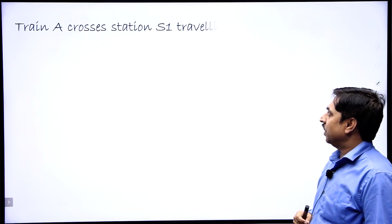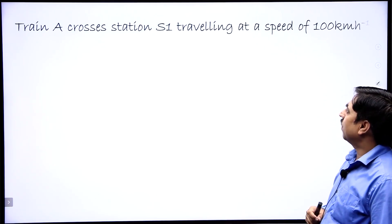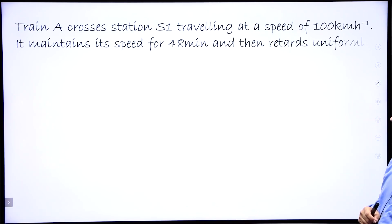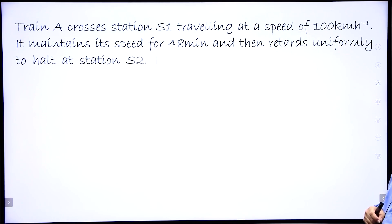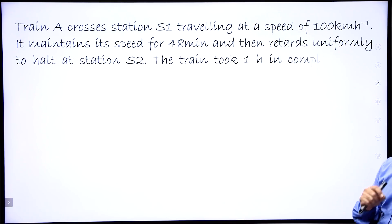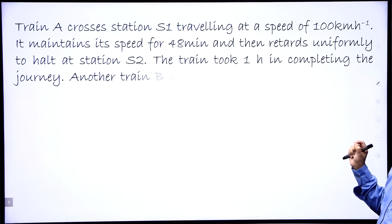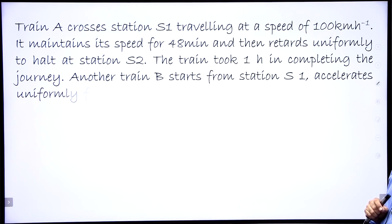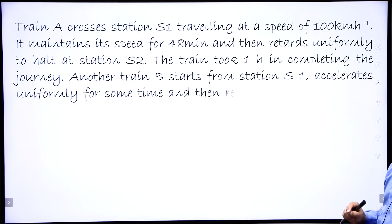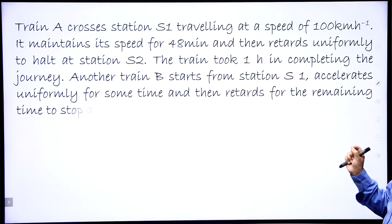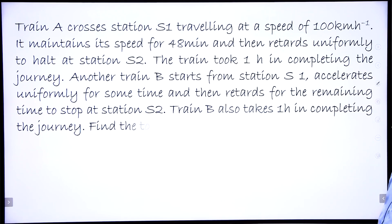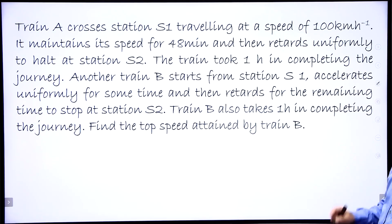Train A crosses station S1 traveling at a speed of 100 kilometers per hour. It maintains its speed for 48 minutes and then retards uniformly to halt at station S2. The train took one hour in completing the journey. Another train B starts from station S1, accelerates uniformly for some time, and then retards for the remaining time to stop at station S2. Train B also takes one hour in completing the journey. Find the top speed attained by train B.